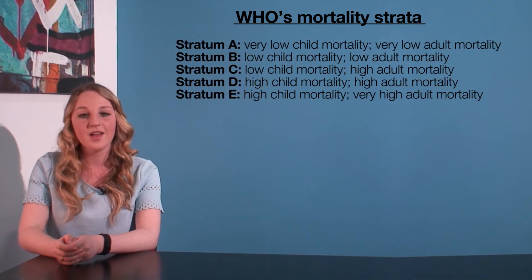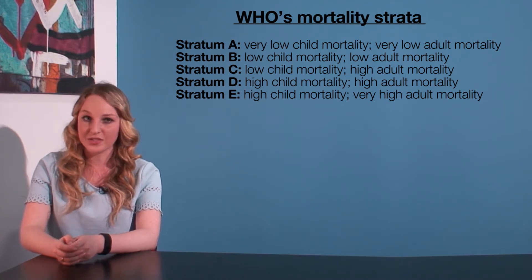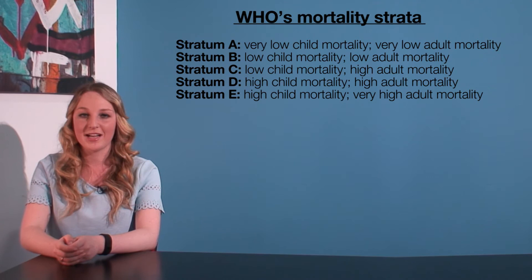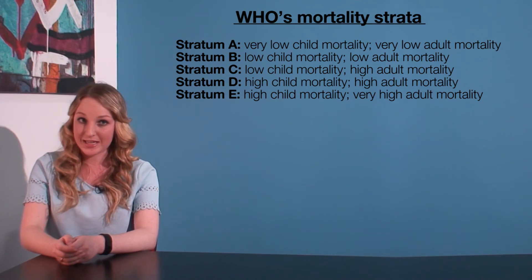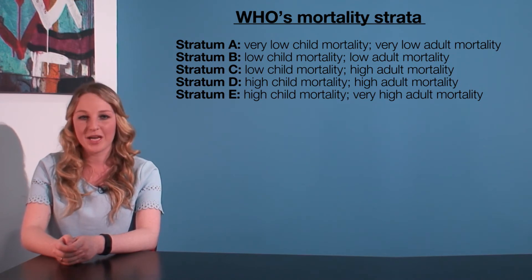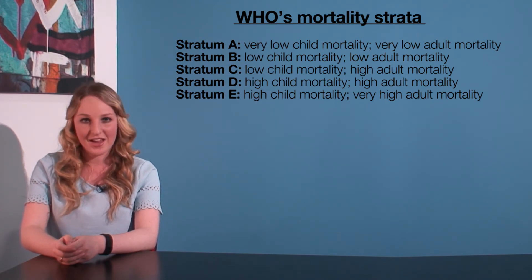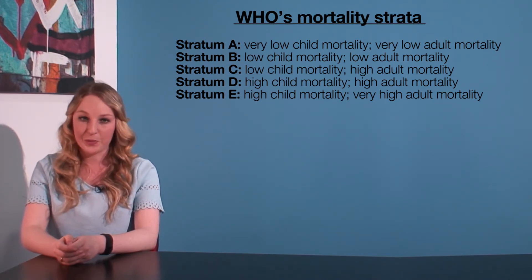These are: stratum A — very low child mortality, very low adult mortality; stratum B — low child mortality, low adult mortality; stratum C — low child mortality, high adult mortality; stratum D — high child mortality, high adult mortality; stratum E — high child mortality, very high adult mortality.